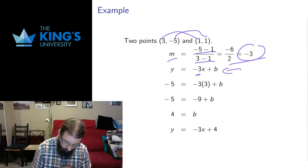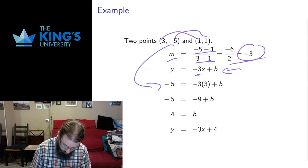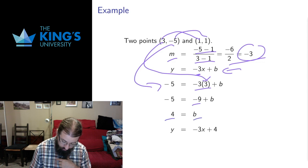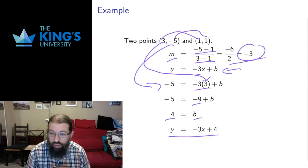I did it with 3 and negative 5, so negative 5 I put that in for the y coordinate, 3 I put that in for the x coordinate. Negative 3 times 3 is negative 9, add 9 to both sides, I get that b is equal to 4, and the equation of the line is y equals negative 3x plus 4.